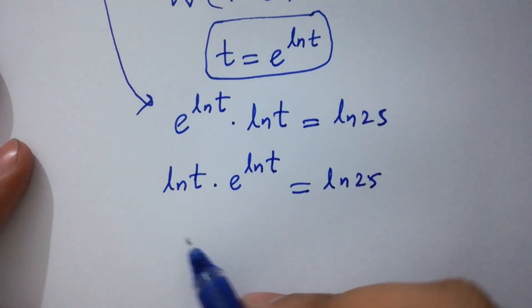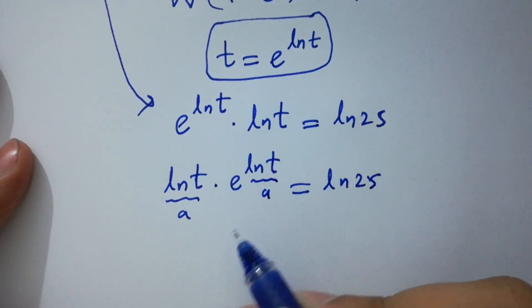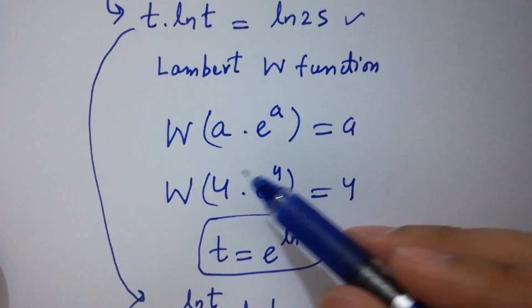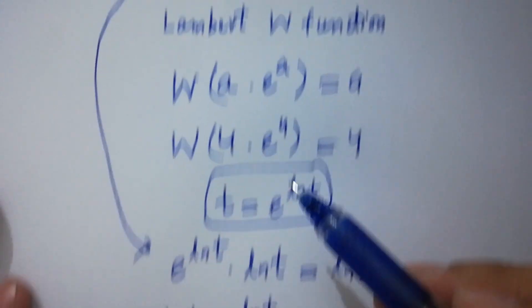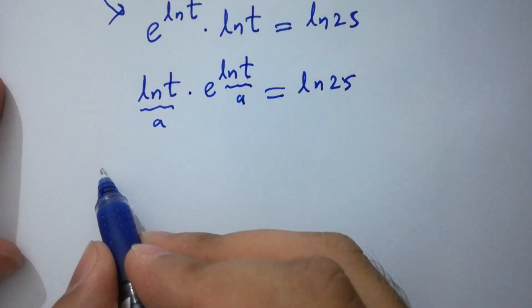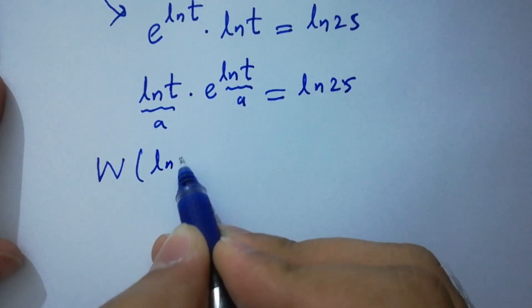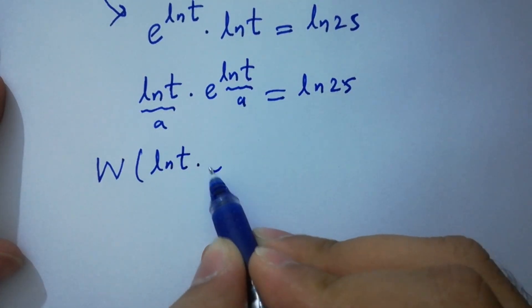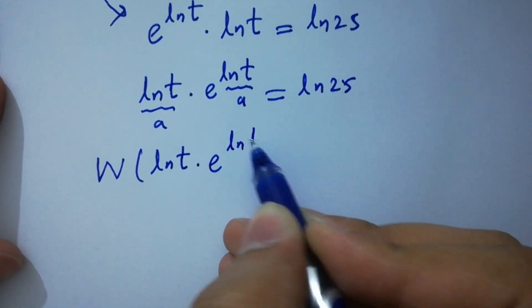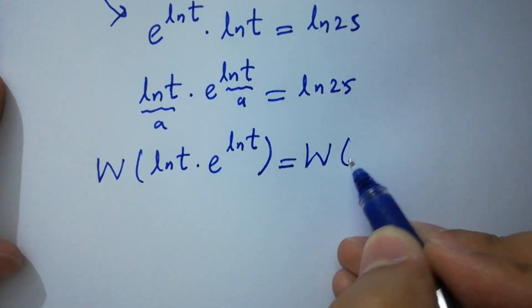So we have this expression as a and this is also equal to a. Like a times e to the power a. So in the next step, I am going to apply here Lambert W function. W of ln t times e to the power ln t equal to W of ln 25.